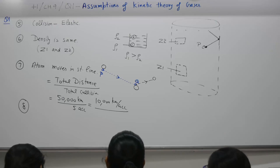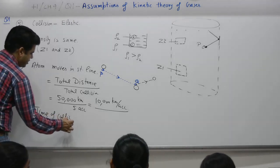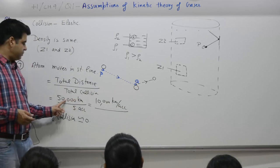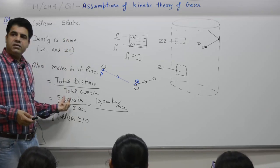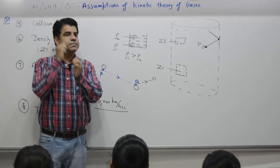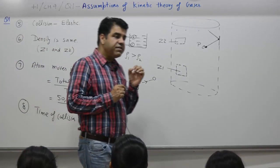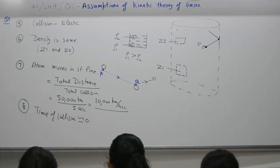8, the collisions are almost instantaneous, means what? Time of collision is almost 0. Travel time, say 50,000 kilometer, maybe the person has taken 1,000 hours to cover that. Agreed or not? 50 kilometer per hour and the person has taken maybe 1,000 hours. During these collisions, one collision, one accident, fraction of a second. One collision, one accident is fraction of second. So the accident time is very, very small in comparison to total travel time. That is what we mean by last point, 8 point. The collisions are almost instantaneous. The time of collision of the two molecules is negligible as compared to time interval between two successive collisions.